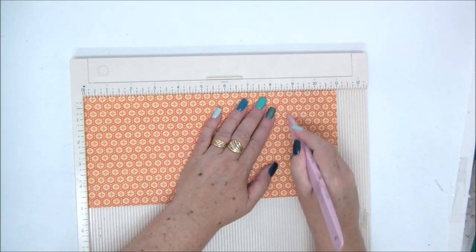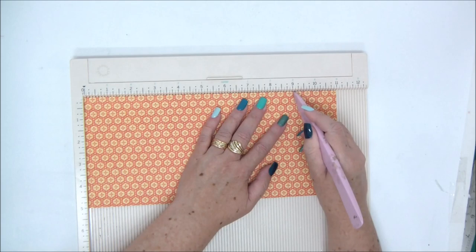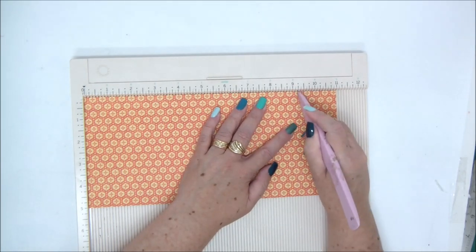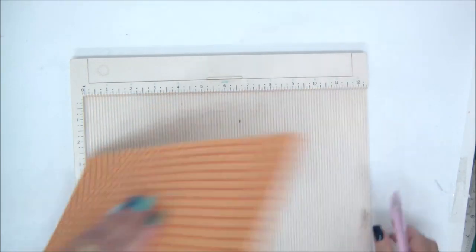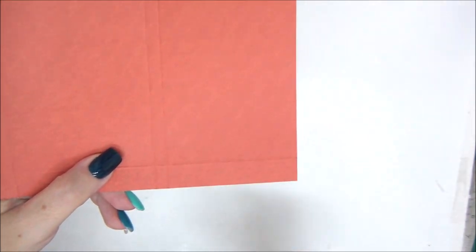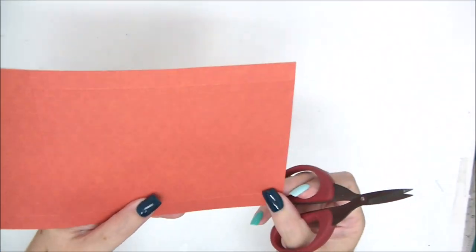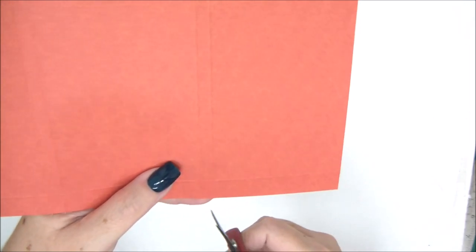All these score lines are going to give us enough space to insert things inside our pockets. We're going to create small spines and these are going to give us the bulkiness that we need.